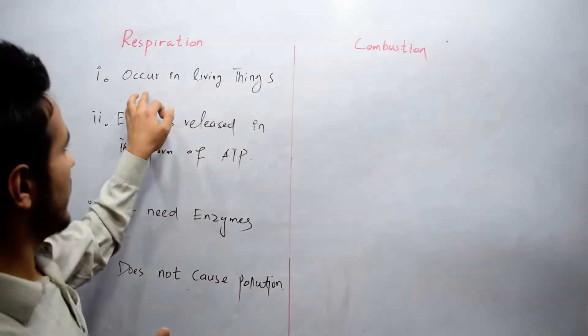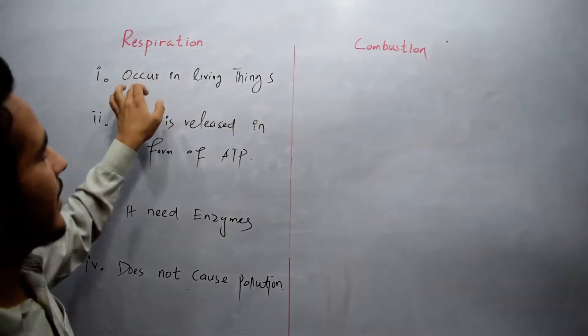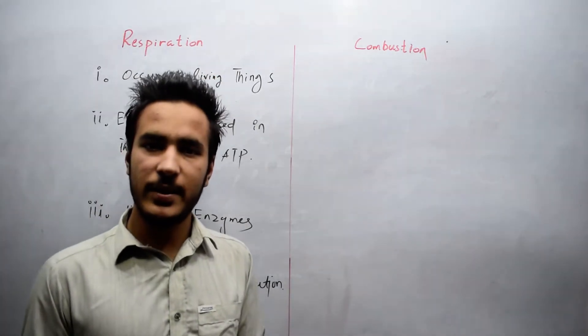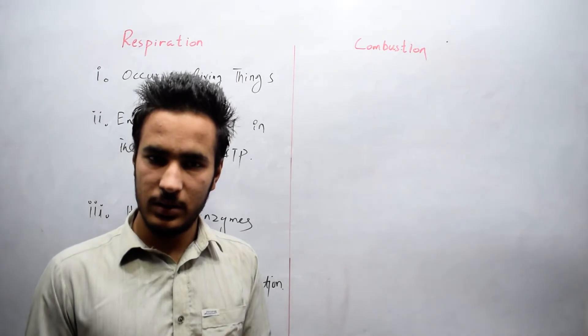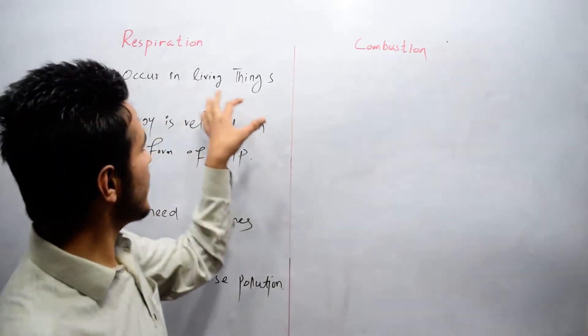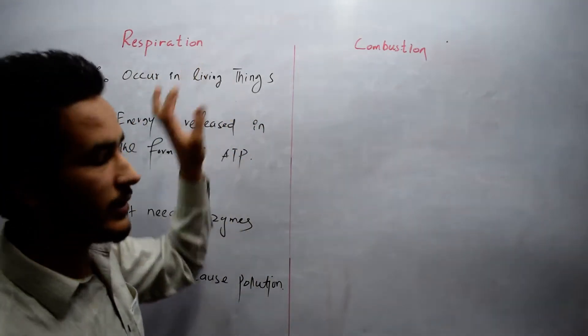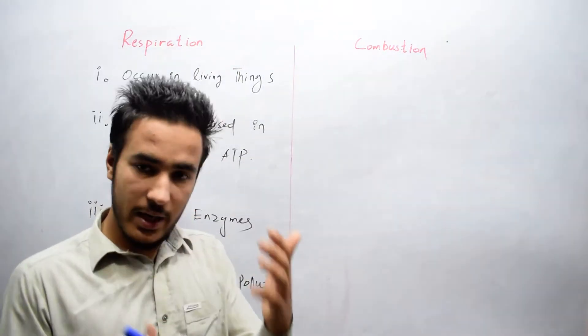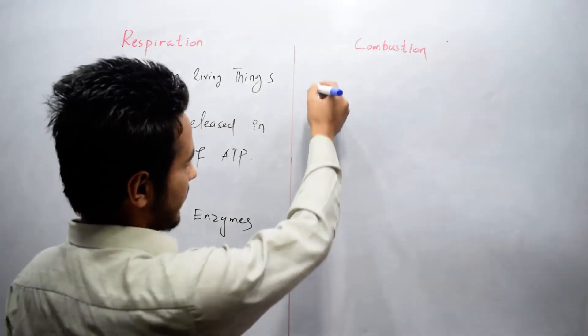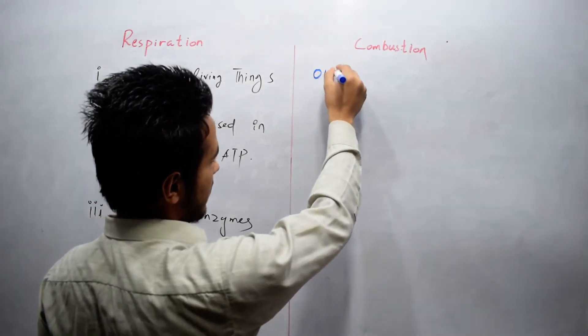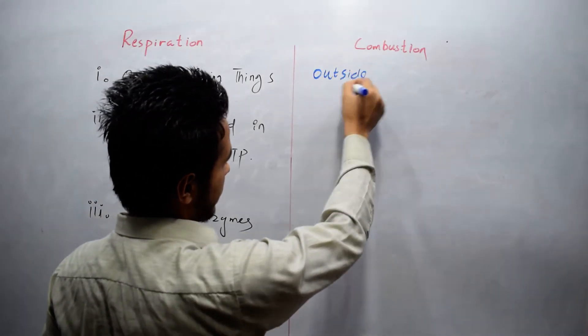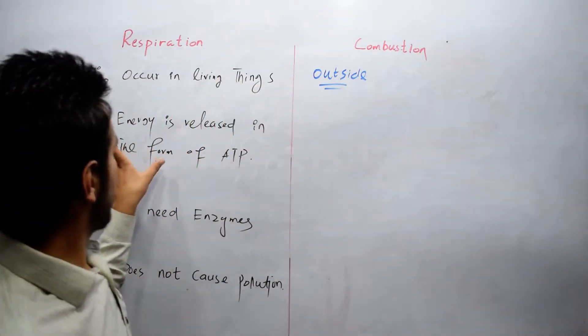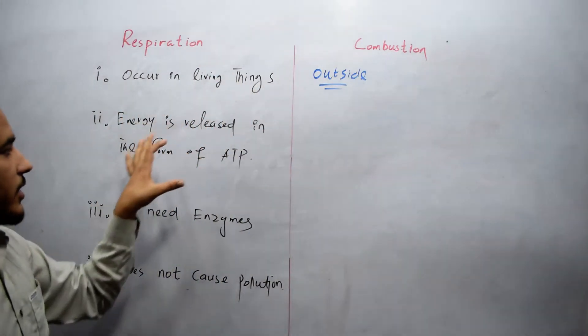Respiration occurs in living things. Respiration is basically the breakdown of food, so it occurs in living things. While combustion occurs outside the body of living organisms.